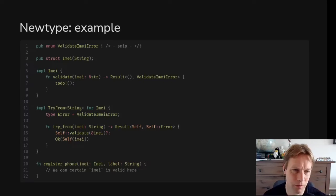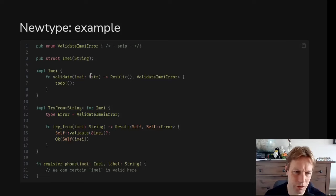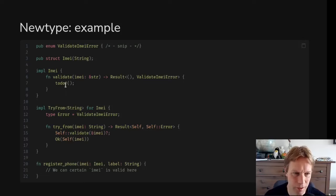So let's have a look at how this will be used. In the impl block of IMEI, there is a function called validate, which takes in a str as a candidate for an IMEI, and it either returns a unit to say yes, that will work as an IMEI, or it returns an error saying that string doesn't match my expectations for an IMEI. I haven't actually implemented the validate function, but you can see it's checking that this string could be turned into an IMEI.